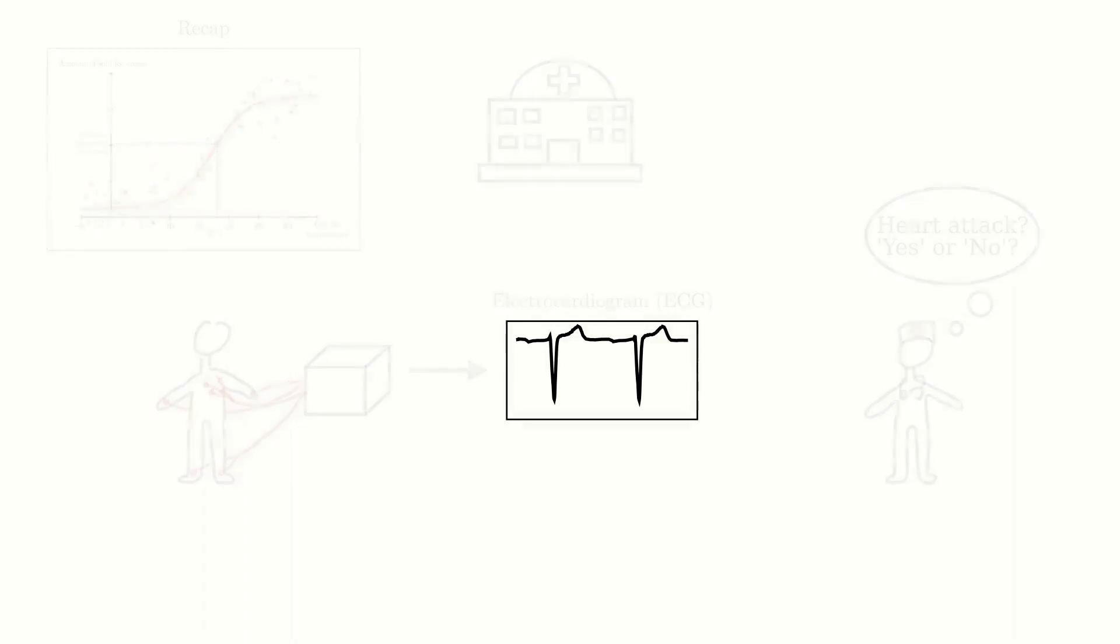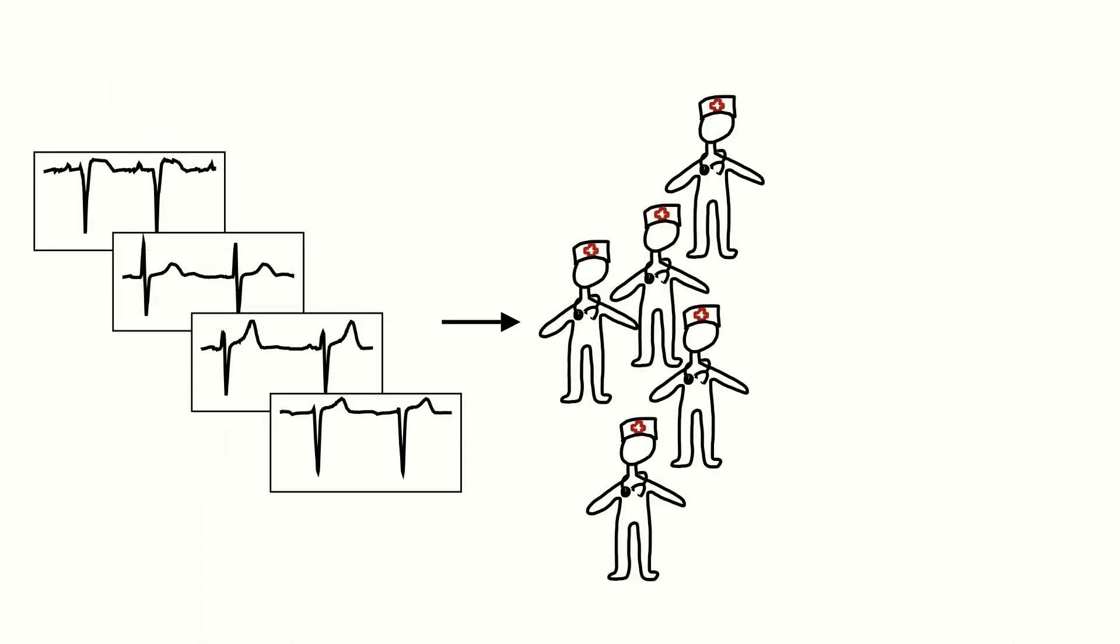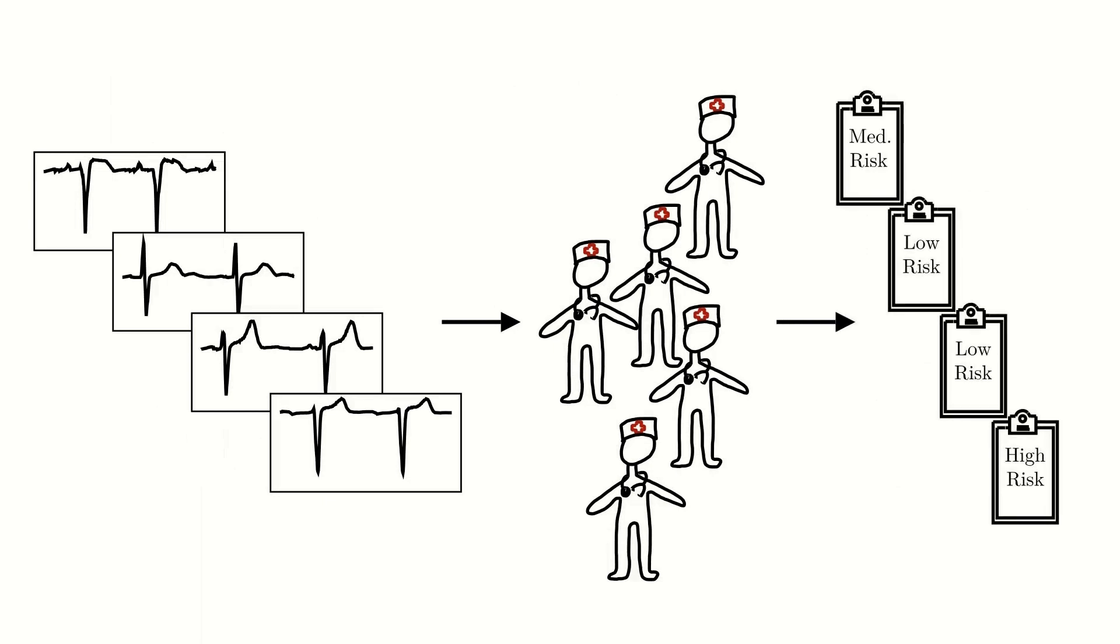Luckily, when a patient gets an ECG at a hospital, the ECG and the corresponding assessment by the doctor is often collected and stored in a database. This means that we have access to thousands or even millions of ECGs and their corresponding heart attack risk scores, as predicted by different doctors.